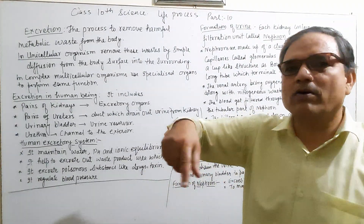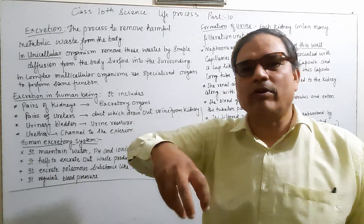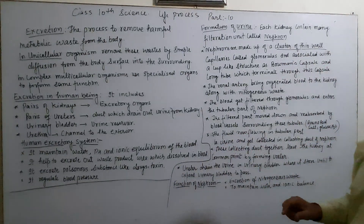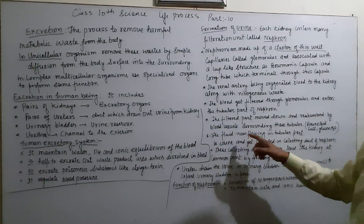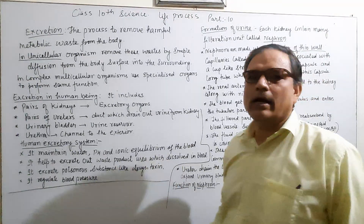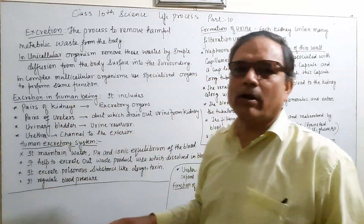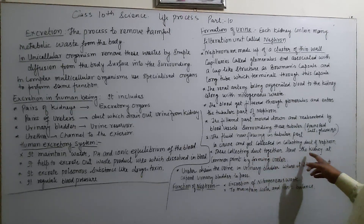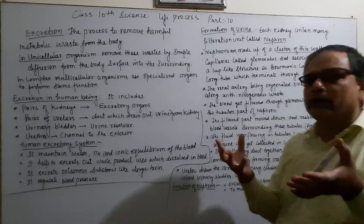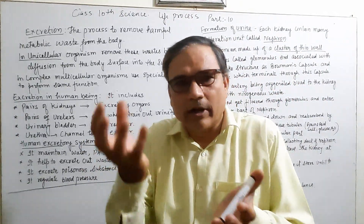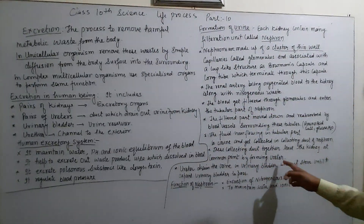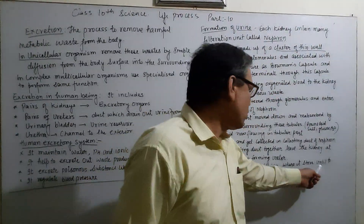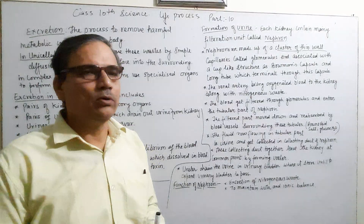After reabsorption of amino acids, water, and salts, the remaining fluid flowing in the tubular part is urine. This urine is collected in the collecting duct within the kidney, then leaves the kidney through the ureters and is collected in the urinary bladder, where it is stored until it passes out of the body.